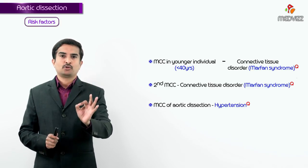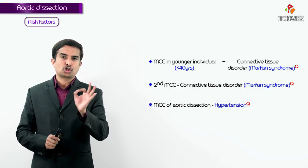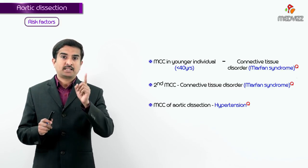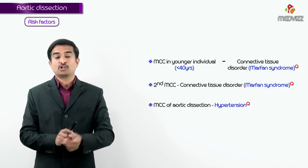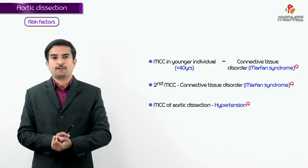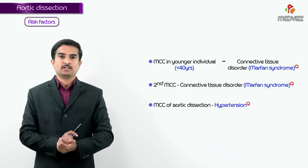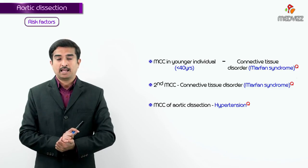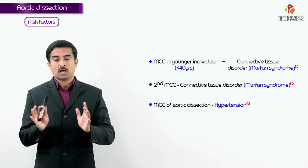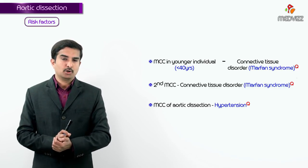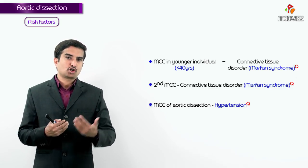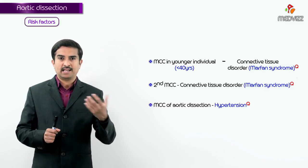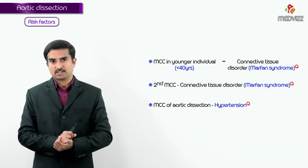In general, Marfan syndrome is the second most common cause of aortic dissection overall. But in younger individuals below the age of 40, Marfan syndrome is the most common cause, not hypertension. This is how you must distinguish the most common cause of aortic dissection in older versus younger individuals.